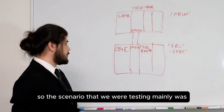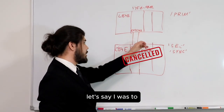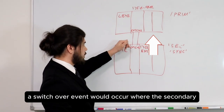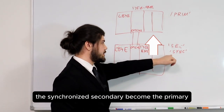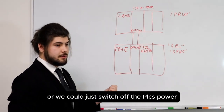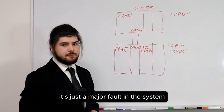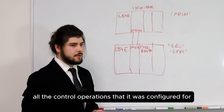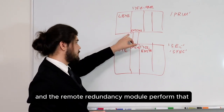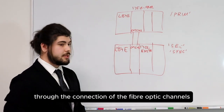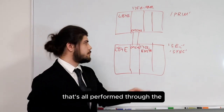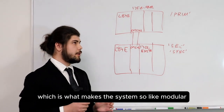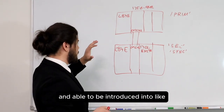The scenario we were testing mainly was communication loss. If I were to unplug an Ethernet cable from the communication module, a switchover event would occur where the synchronized secondary becomes the primary. Or we could switch off the PLC's power — a power loss. More generally, it's just a major fault in the system. If the main controller is no longer able to perform all the control operations it was configured for, it will detect that and the redundancy module will perform the switchover through the fiber optic channel connections. That switchover is not performed through the Ethernet — it's all performed through the fiber optic channels, which is what makes the system so modular.